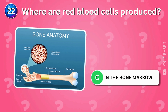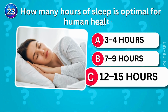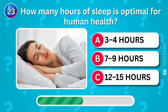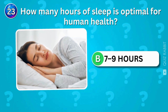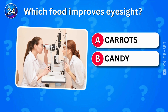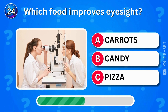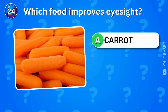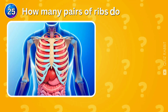Where are red blood cells produced? Red blood cells are produced in the bone marrow — that's your body's blood factory. How many hours of sleep are optimal for human health? Seven to nine hours — get enough rest to keep your mind sharp. Which food improves eyesight? Carrots improve eyesight, but they won't give you superhero vision.